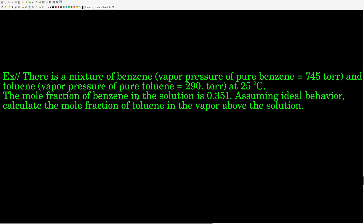In the solution, we know there are two components, so the mole fraction of toluene is just 1 minus the mole fraction of benzene. But that's not what we're asked — we want the mole fraction of toluene in the vapor above the solution. We know both components are volatile because we're given vapor pressures for both. So first, we'll use the modified Raoult's Law to get the total pressure above the solution. Then we'll use the gas law: the partial pressure of a gas in a mixture equals the mole fraction of that gas times the total pressure. We'll rearrange to solve for the mole fraction of toluene in the vapor.